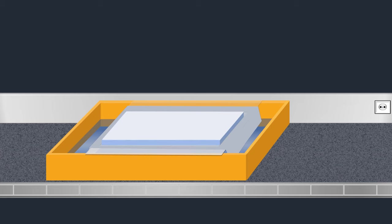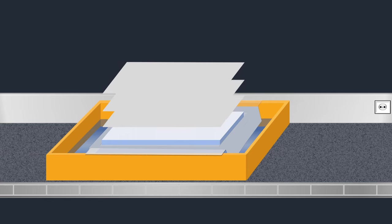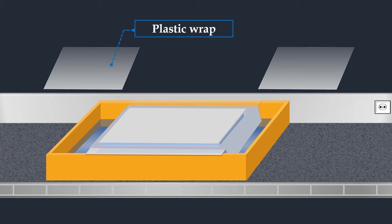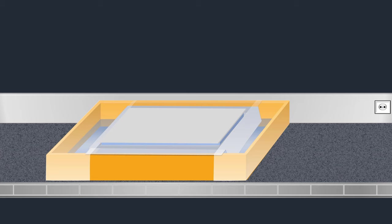Next, pre-wetted pieces of extra thick blotting paper are placed on top of the membrane. The exposed areas of the wick are covered with strips of plastic wrap to prevent transfer buffer from bypassing the gel during the transfer process.